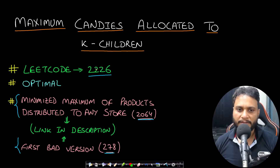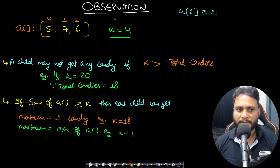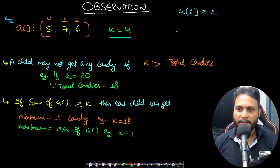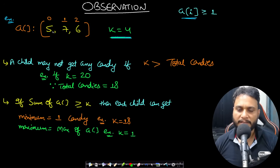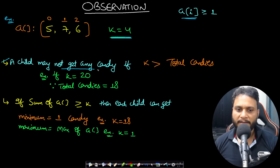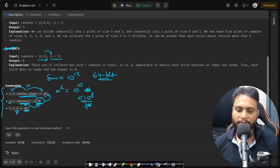Now for key observations using the example piles [5, 7, 6] with k equals four. Since each pile has at least value one per the constraints, a child may not get any candy if k is greater than the total number of candies — as shown in example 2. So if k is 20 and the sum is only 18, we return zero.